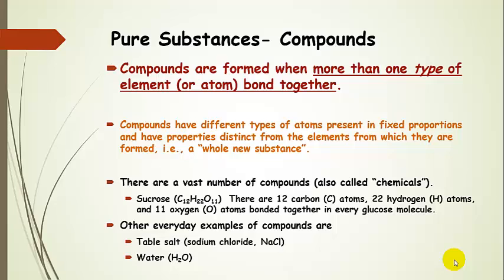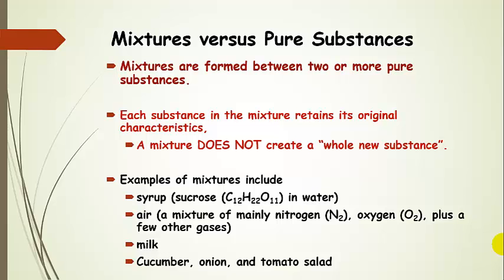One example is sucrose — that's just table sugar. We have 12 carbons, 22 hydrogens, and 11 oxygens all bonded together, and that gives us a sucrose molecule. Other everyday examples of compounds include table salt — sodium chloride — a sodium cation and a chloride anion bonded together with ionic bonding. That's table salt; it's a pure substance. And also water, H2O, as mentioned previously.